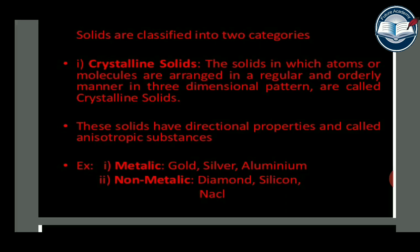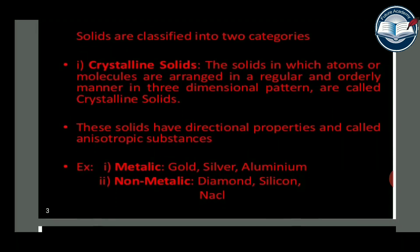Solids are classified into two categories: crystalline solids and amorphous solids. Crystalline solids are those in which atoms or molecules are arranged in a regular and periodic manner in a three-dimensional geometrical pattern. These solids have directional properties and are called anisotropic substances. Examples of crystalline solids include metallic solids such as silver and aluminium, and non-metallic solids such as diamond, silicon, and sodium chloride.